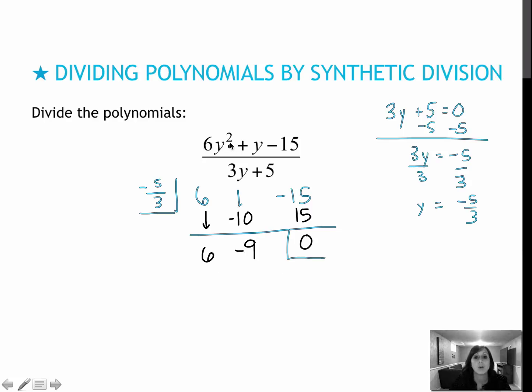My solution would be 1 degree less than this, so it's just 6y to the first minus 9. And that should have been the same answer you got with long division.